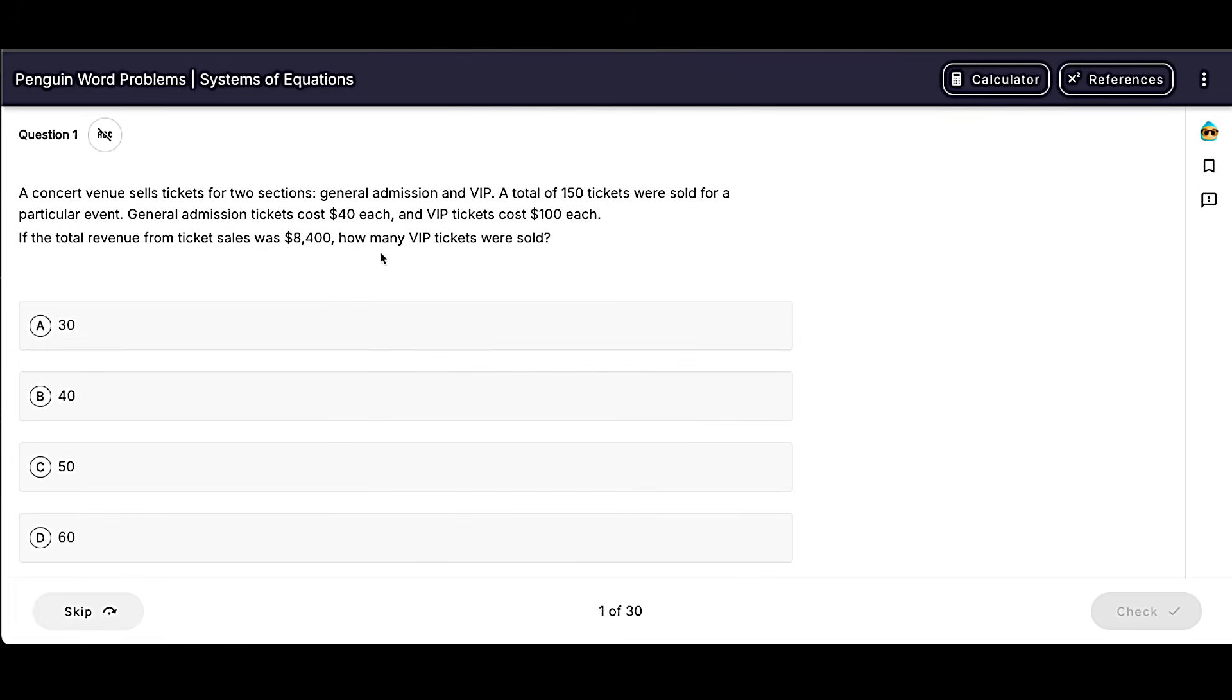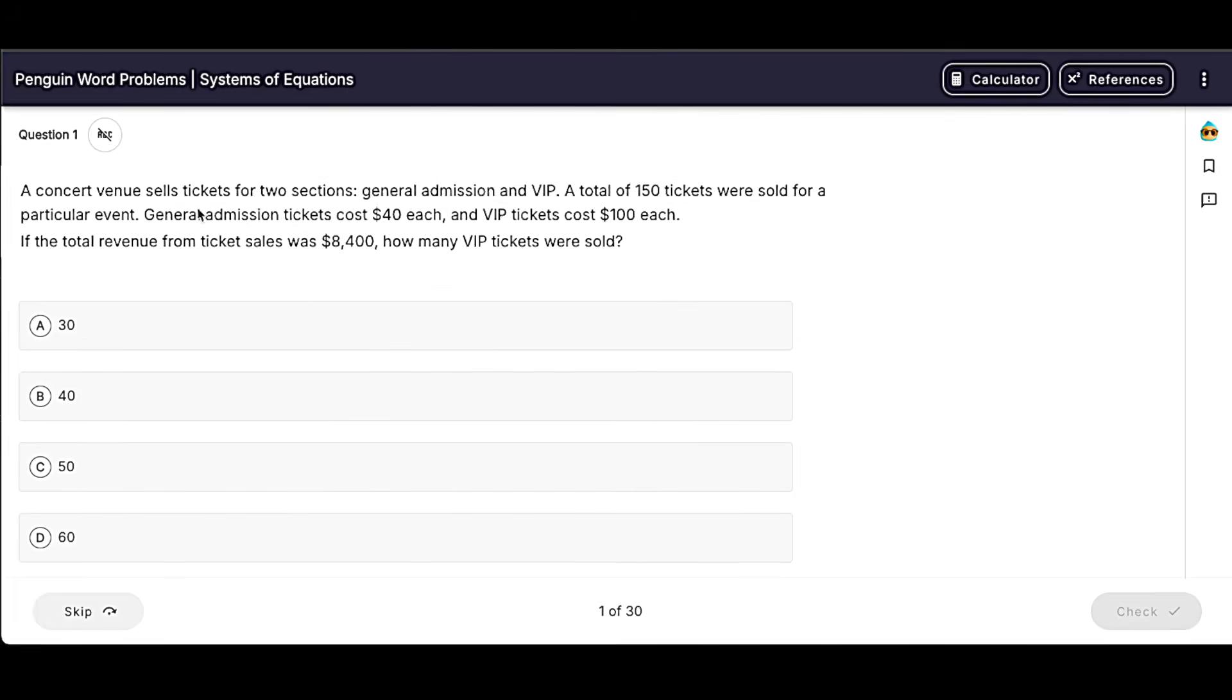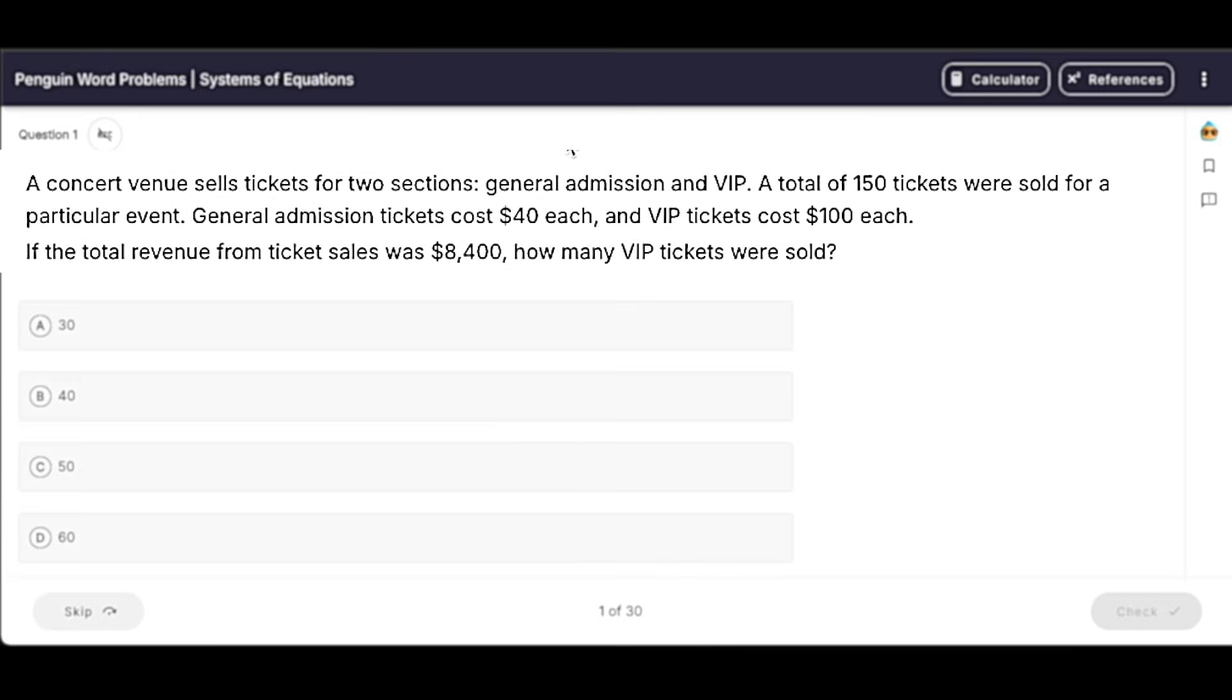This first question is a classic example. We've got a concert venue selling tickets for two sections. So our items in this case are going to be tickets, and we have either general admission tickets or VIP tickets.